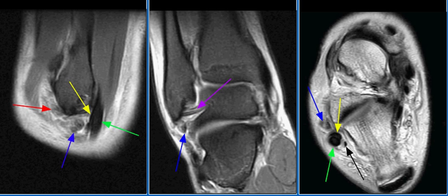Findings are consistent with grade 3 lateral ankle sprain with anterior talofibular and calcaneofibular ligament tears. The calcaneofibular ligament is extracapsular and stabilizes the tibiotalar and subtalar joints. It is crossed superficially by the peroneal tendons.